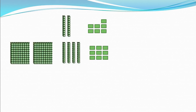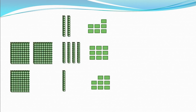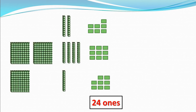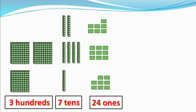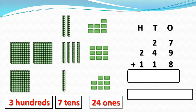Then there are 1 box of 100, 1 stack of tens, and 1, 2, 3, 4, 5, 6, 7, 8 ones blocks. Now add them. Start with 1s. There are 24 ones altogether: 7 tens and 3 hundreds. There are 24 ones but we cannot write 24 in the 1s column. 24 equals 2 tens and 4 ones. So here we convert 24 into 2 tens and 4 ones.